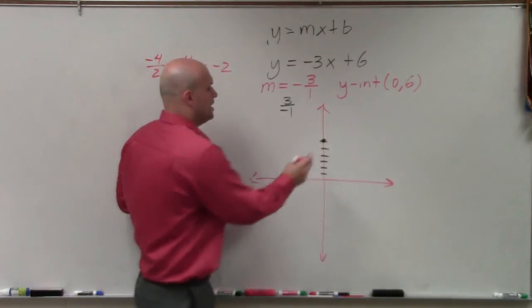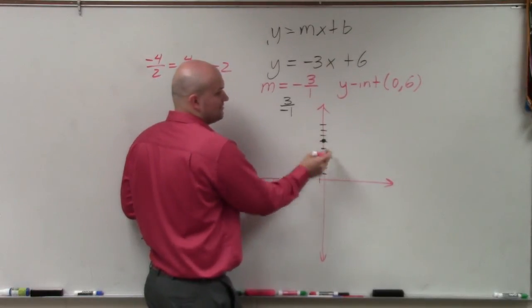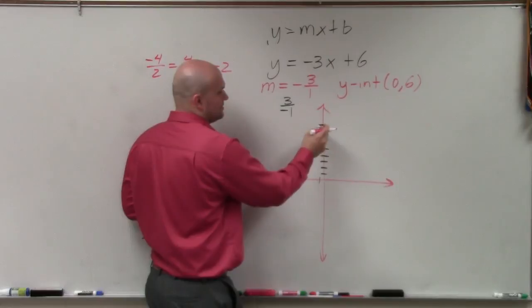So from this point, I can go up 3 units: 1, 2, 3. And then run negative is going to be to the left. So I'll go up 3 to the left one.